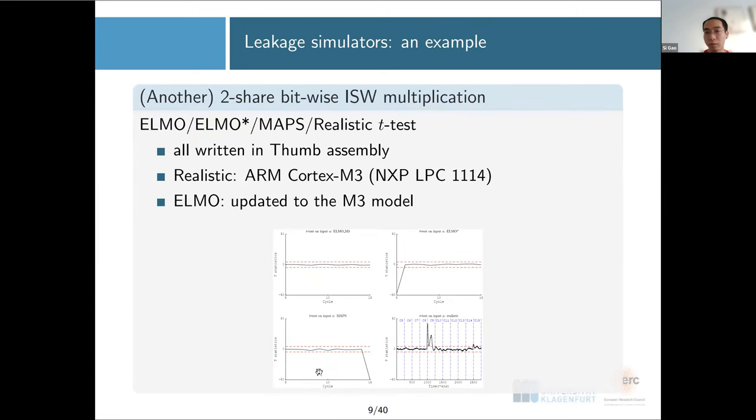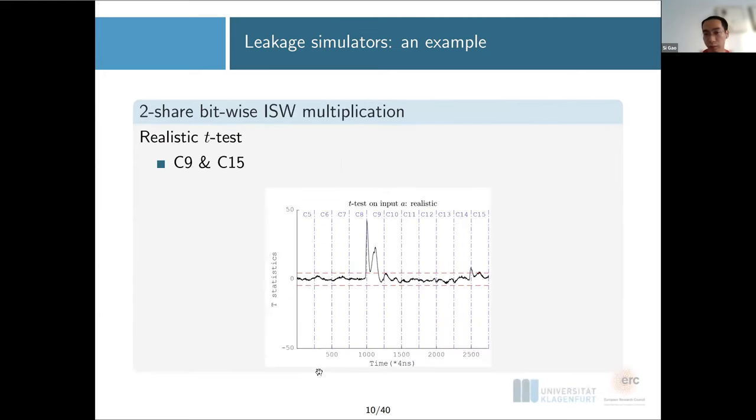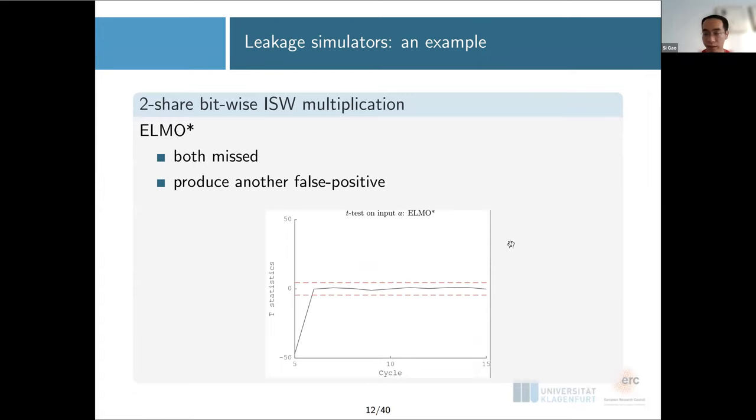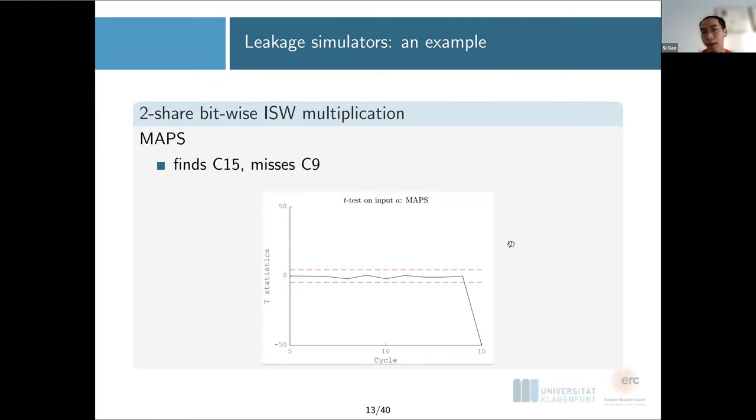Okay, so this is actually another piece of ISW bitwise multiplication. We are going to evaluate all the ELMO family, MAPS, with a realistic test. What we are observing here is with this realistic trace on protection order three, we see two cycles being leaked: one is cycle 9 and one is cycle 15. In ELMO, you miss both of them. In ELMO*, an extension of ELMO, you not only miss both of them, you also produce false positives. For MAPS, you find cycle 15 but you miss cycle 9.